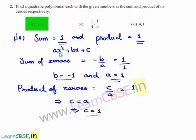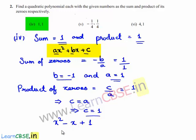Substituting the values of a, b, and c in ax² + bx + c, we get x² - x + 1. Hence, the required quadratic polynomial is x² - x + 1.